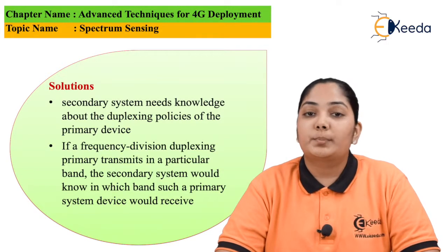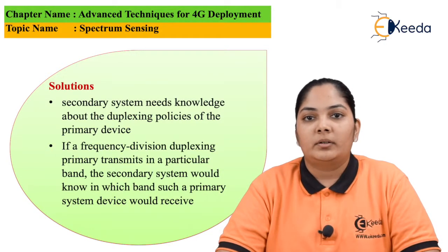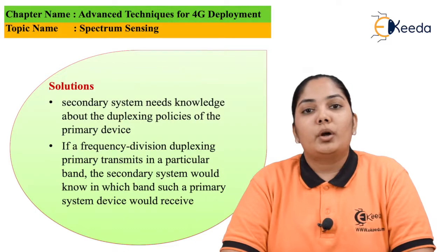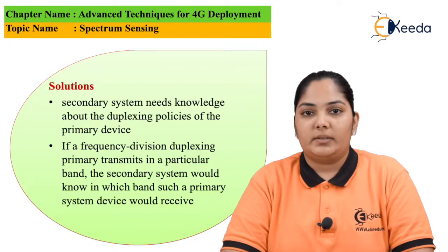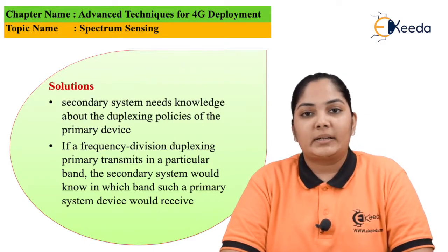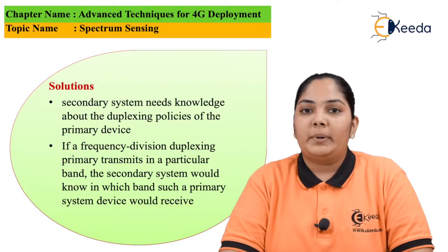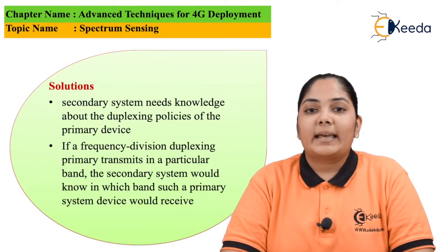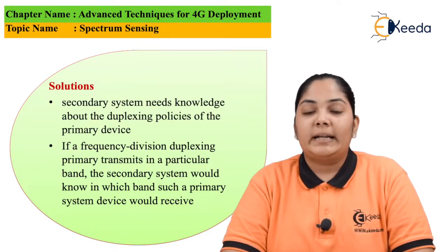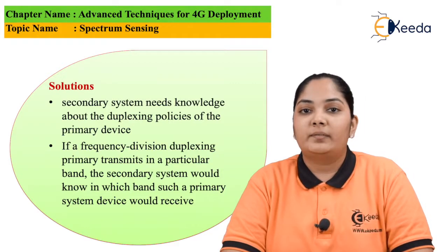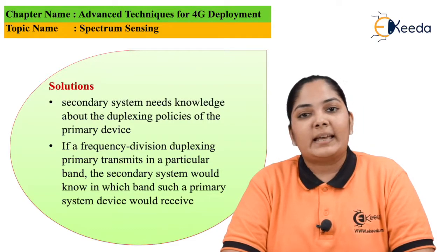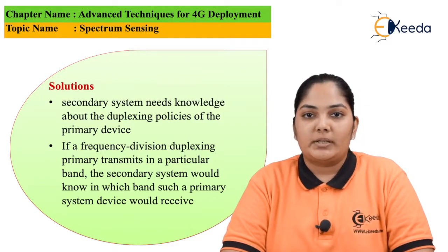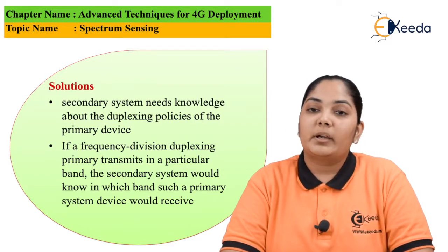The second technique is to observe the spurious emissions from the receiver. Ideally the receiver should not emit any energy, but practically the antenna is not isolated from the receiver. Hence, certain energy received by the receiver antenna gets re-emitted back. Once the secondary system is able to identify these emissions, it is easy to find out what frequency the receiver is receiving. So the transmitted frequency we can identify anyway, and here we are also able to identify the received frequency, making spectrum sensing easier.